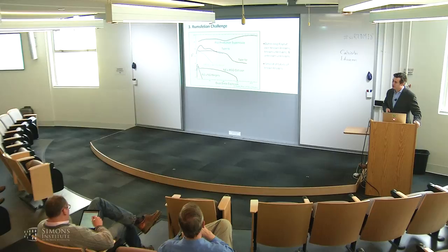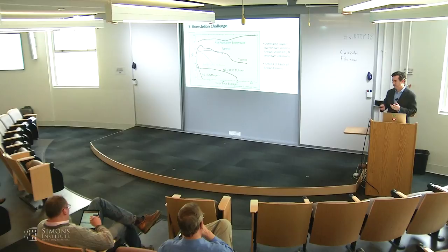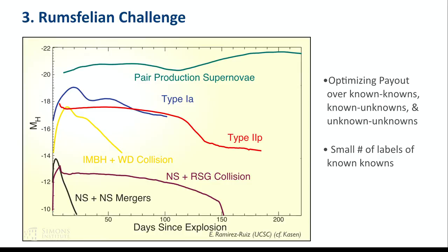There's also the Rumsfeldian challenge — trying to optimize over the known knowns (bread-and-butter time domain science), the unknown unknowns, and things in the middle like known unknowns — things you have theoretical models for but haven't yet seen. This plot, about 10 years old, shows the neutron star–neutron star merger curve approximately correctly from a theoretical perspective. Now I'd call that more of a known known, but there are still unknown unknowns that by definition I can't put on this plot. You can also see the timescales over which big explosive events proceed.